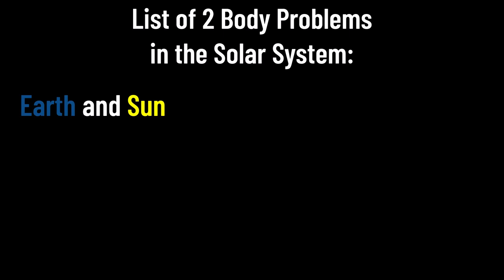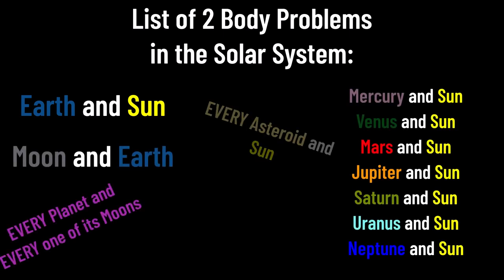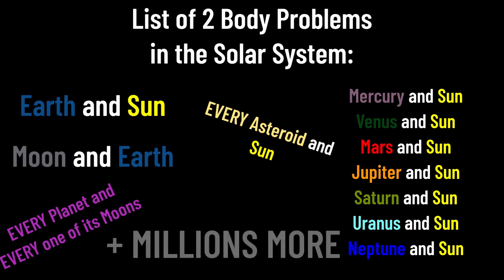In the solar system there are lots of two-body problems, such as the Earth and the Sun, the Moon and the Earth, all of the planets with the Sun and all of the planets with their moons, the asteroid belt around the Sun, the list goes on. The key here is that each of these systems contain two bodies, which orbit their common centre of mass.